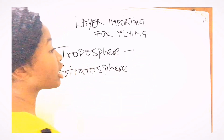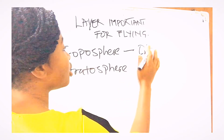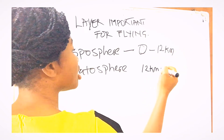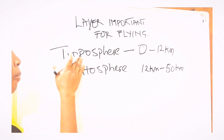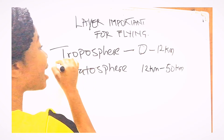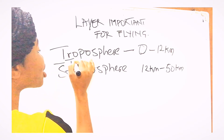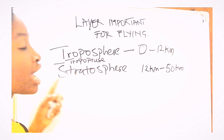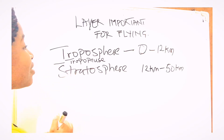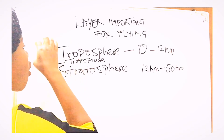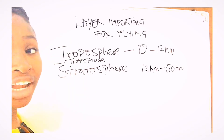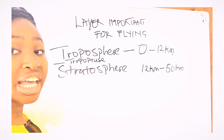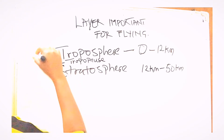The troposphere starts from zero to 12 kilometers. Between the troposphere and the stratosphere, which goes from 12 to 50 kilometers, there is a boundary called the tropopause. For student pilots, and the majority of turboprops, propeller aircraft, and piston aircraft, they mainly use the troposphere. You rarely see them going into the stratosphere.